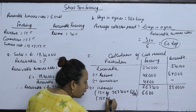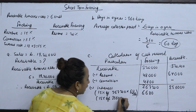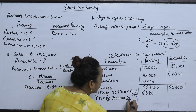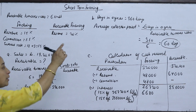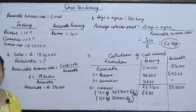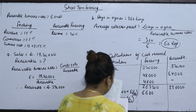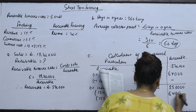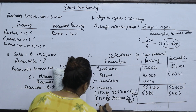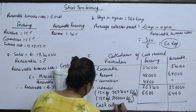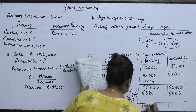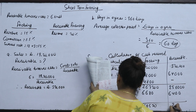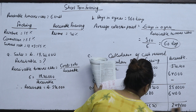About 15% of 2,56,000 into 60 divided by 360. The interest comes from the available balance. It is 64,000. We can say this is the cash collected, which is 2,60,520. Then it is 29,600.